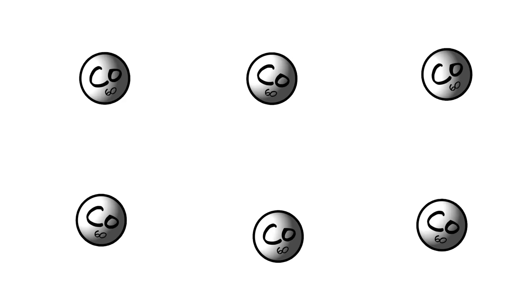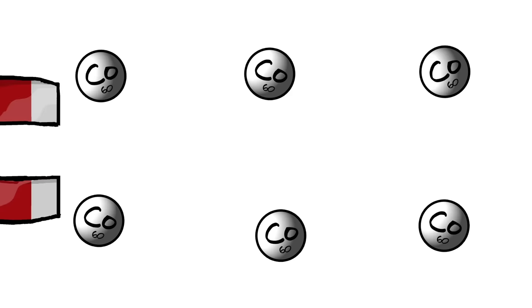To do this, she and a team of low temperature scientists cooled a collection of cobalt-60 atoms to just three thousandths of a degree above absolute zero. Then they applied a strong magnetic field to align all the nuclei with their spin pointing in the same direction.